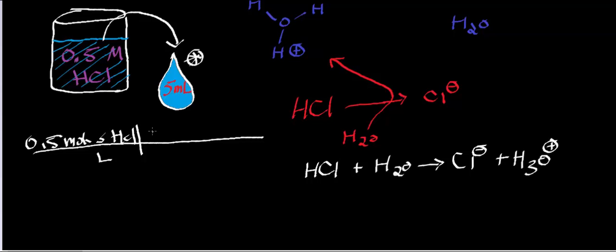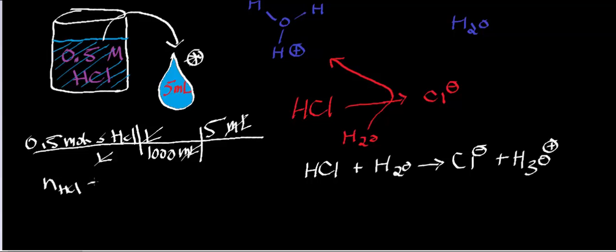First, let's convert liters to milliliters: 1 liter equals 1,000 milliliters. So that gives us 0.5 divided by 1,000 moles per milliliter. I have 5 milliliters of that, so I multiply by 5 milliliters — milliliters cancel — and the result is in units of moles. The number of moles of HCl is 0.0025 moles.